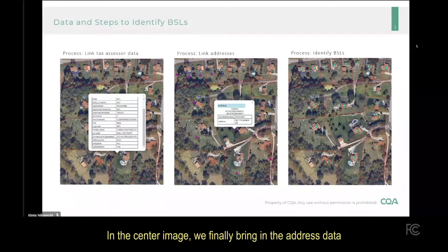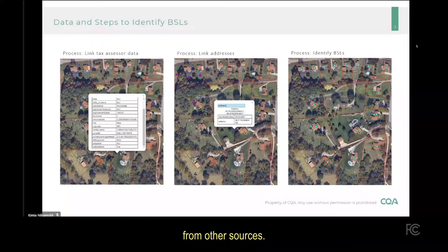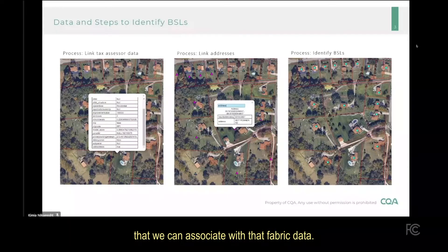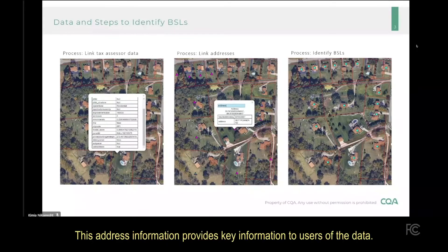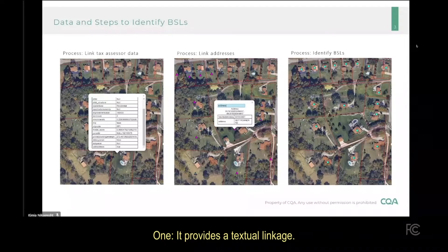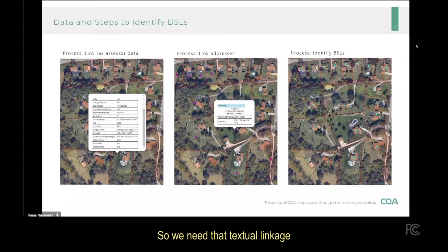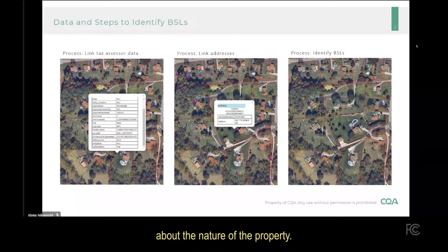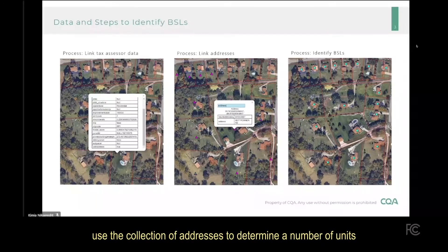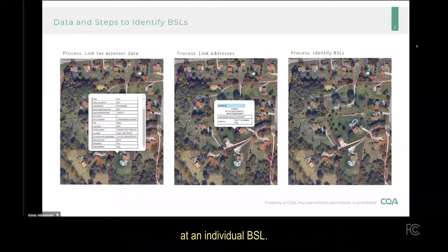In the center image, we bring in address data from other sources. We have some address information from the tax assessor, and we go to additional data sources to pull in a complete list of addresses to associate with that fabric data. This address information provides key information to users: it provides that textual linkage, since most parties know their address but not their latitude and longitude. It also provides postal information about whether the property is residential or non-residential, and we can use the collection of addresses to determine the number of units at an individual BSL.